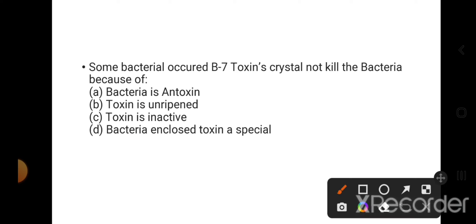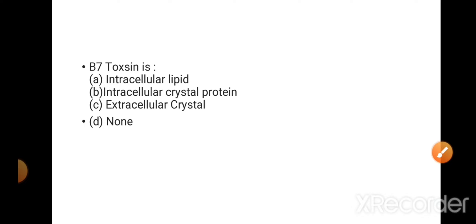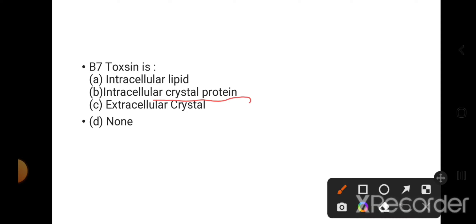Some bacteria are not killed by BT toxin crystals. Why does this happen? Because BT toxin is inactive and is an intracellular crystal protein. Yes, this is the right answer - intracellular crystalline protein.